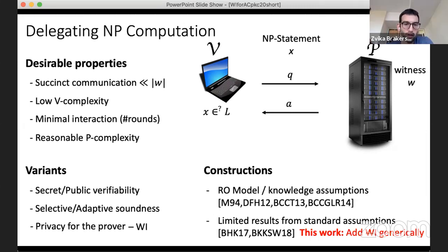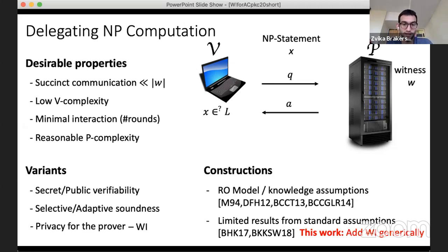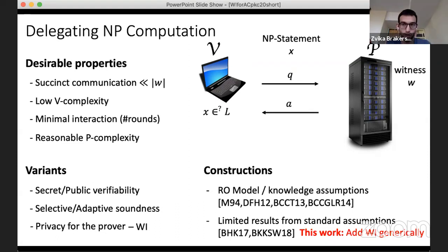This work concerns succinct NP delegation: a verifier wants to certify an NP statement x using a prover with a witness, while keeping the verifier's computation and communication much smaller than the witness size. We consider a two-message protocol with computational soundness: the verifier sends a query, the prover responds, and the verifier certifies the statement. In the random oracle model or under knowledge assumptions you get near-optimal parameters.